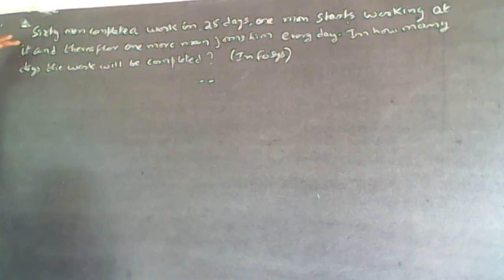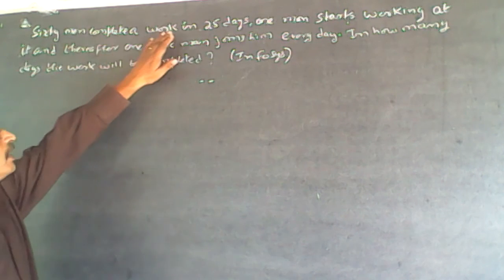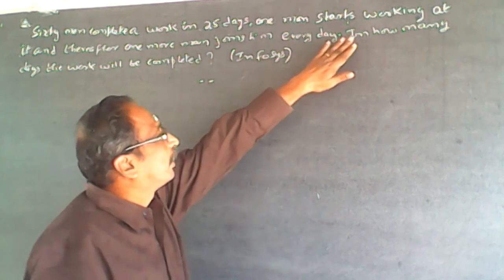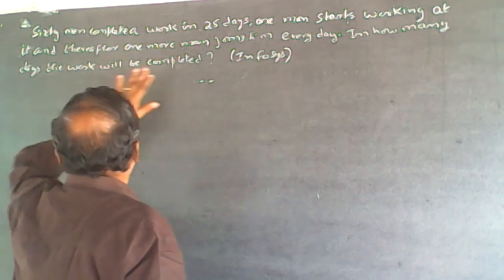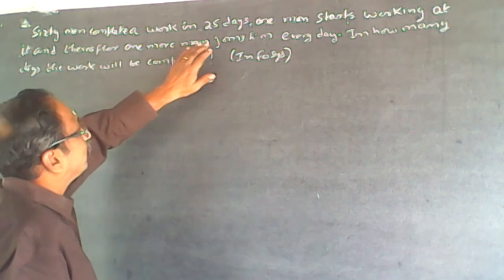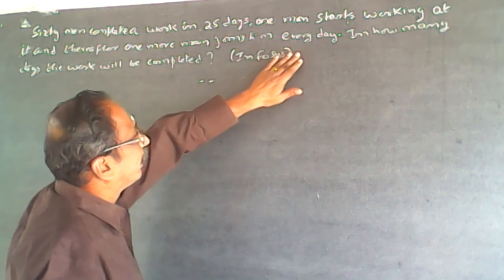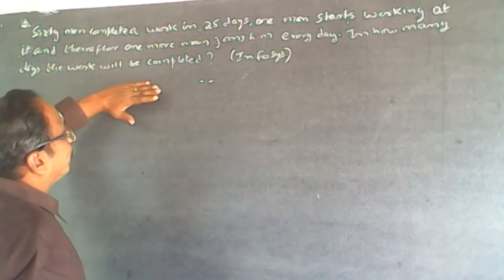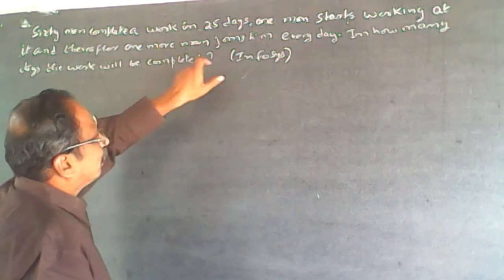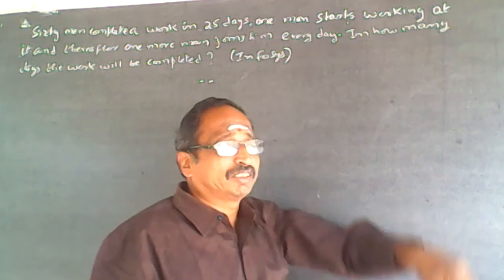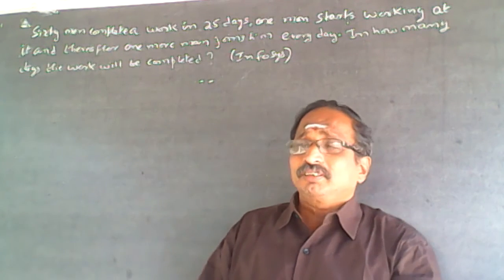The question is: 60 men complete a work in 25 days. One man starts working at it and thereafter one more man joins in every day. In how many days will the work be completed?